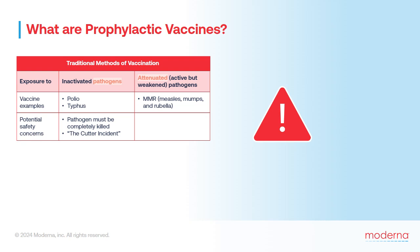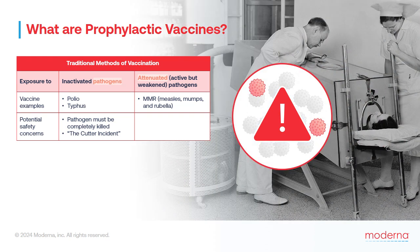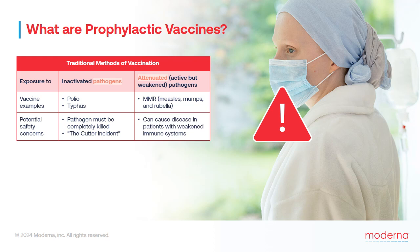If the pathogen is not completely killed, the vaccine can actually cause disease. In an infamous case in 1955, known as the Cutter Incident, Cutter Laboratories released a batch of polio virus that they had failed to completely inactivate. When it was used for vaccination, it caused more than 40,000 cases of polio, lifelong paralysis for 200 people, and 10 deaths. Similarly, patients with weakened immune systems, or who take an immunosuppressant because they've had an organ transplant, are often advised against taking attenuated pathogen vaccines, because their weaker immune systems may not be able to control any type of infection, even by a weakened pathogen.